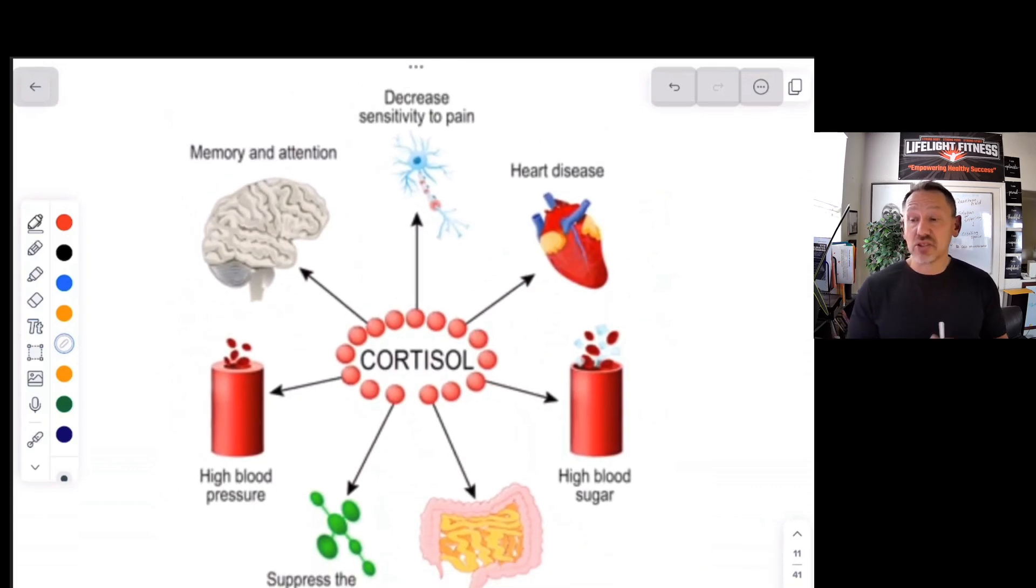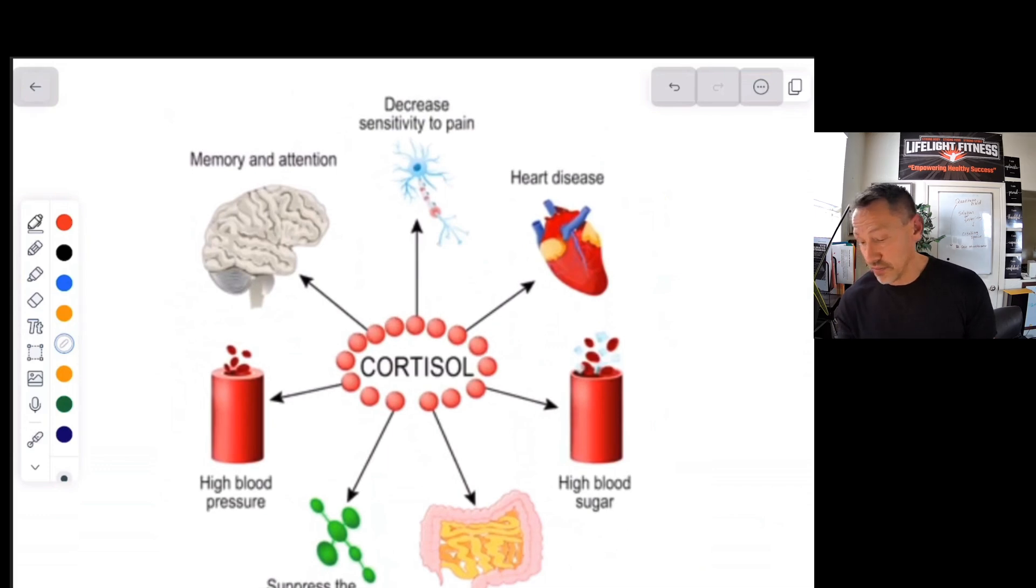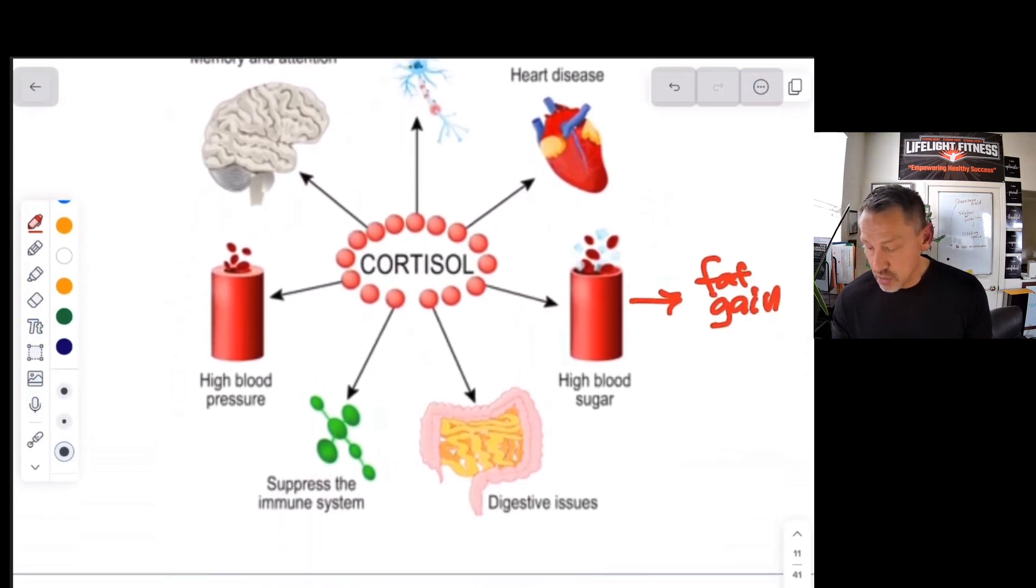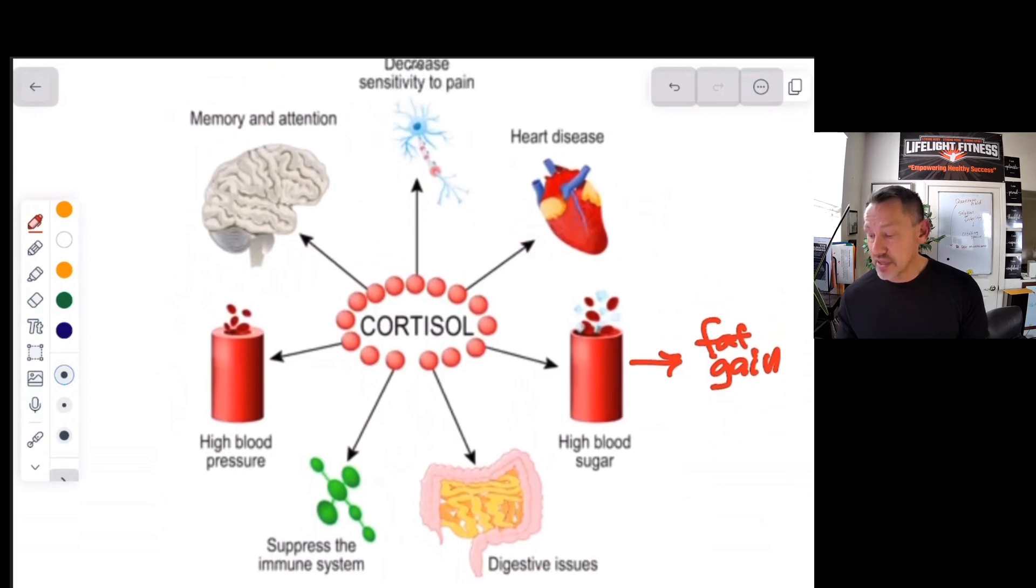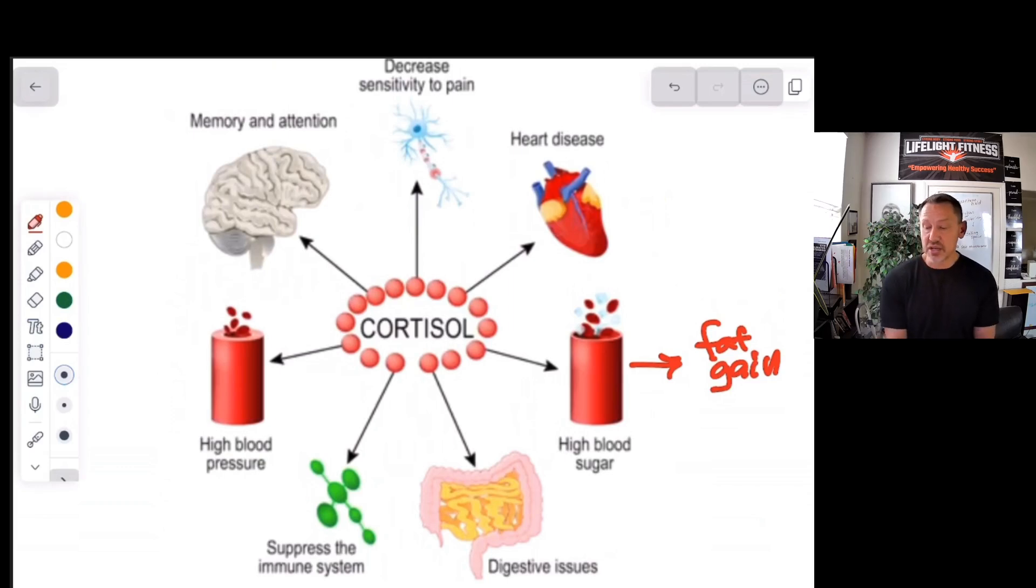Here is the hormone causing the most trouble. Cortisol is killing people. It impacts high blood pressure, high blood sugar, which makes fat gain very, very common. When you think of cortisol, you think of stress because it is a stress hormone. We know we're stressing too much, but we don't know what to do about it. People are getting heart disease, issues with memory and attention, and it's suppressing the immune system and digestive issues. The most important hormone we must take control over is cortisol.